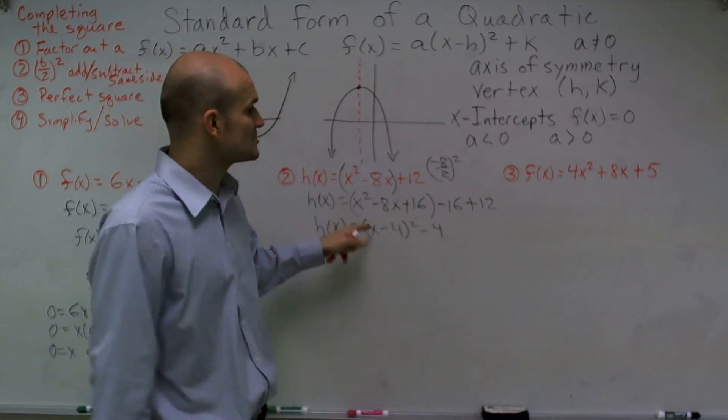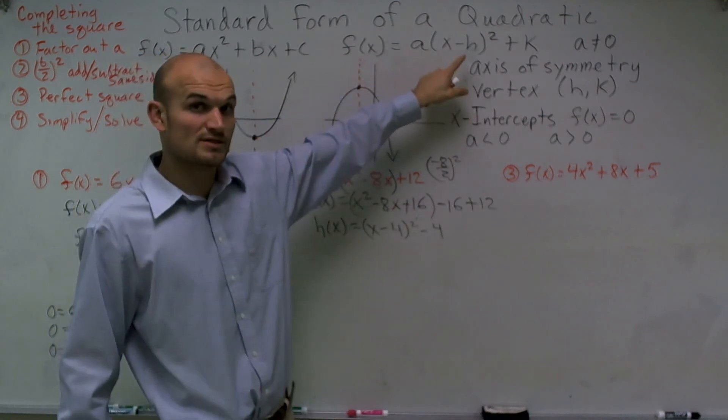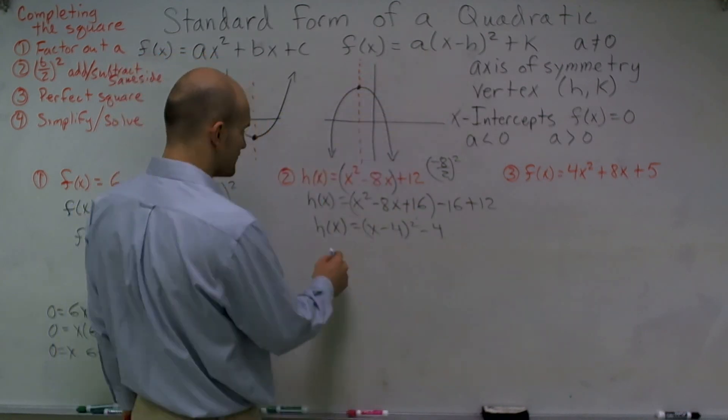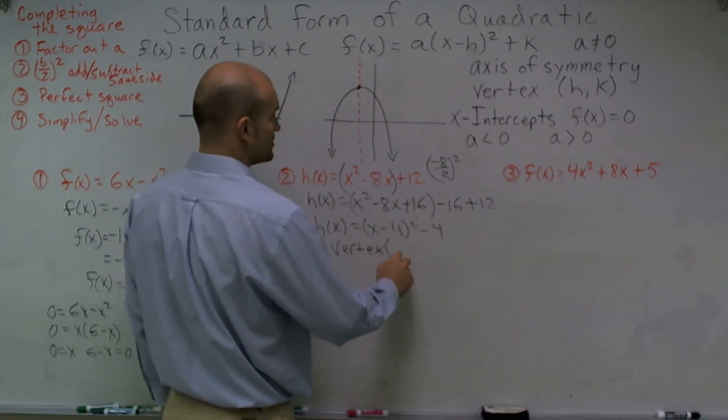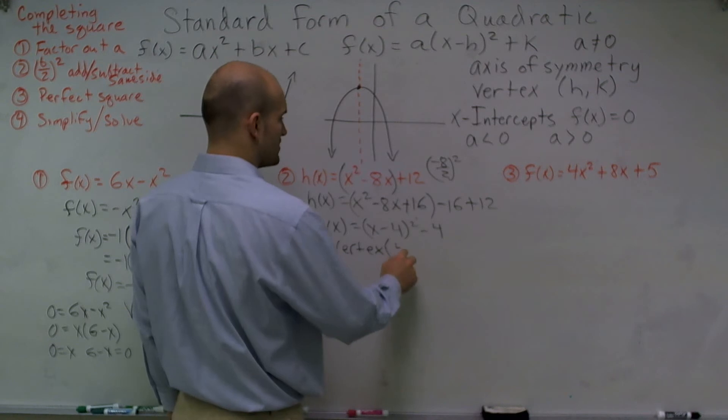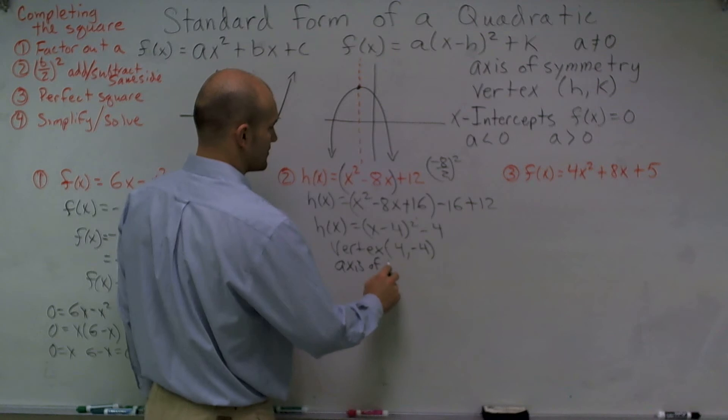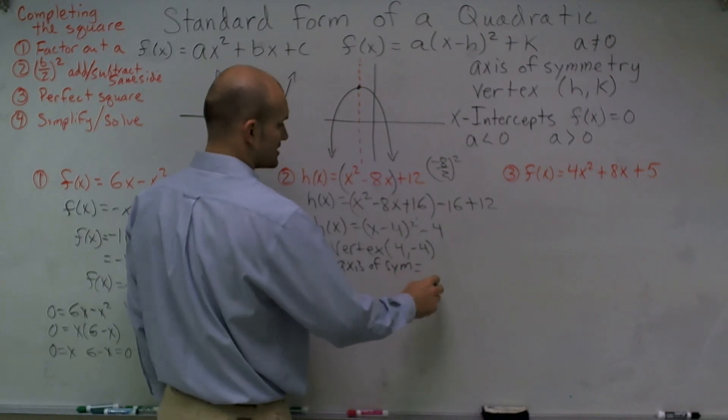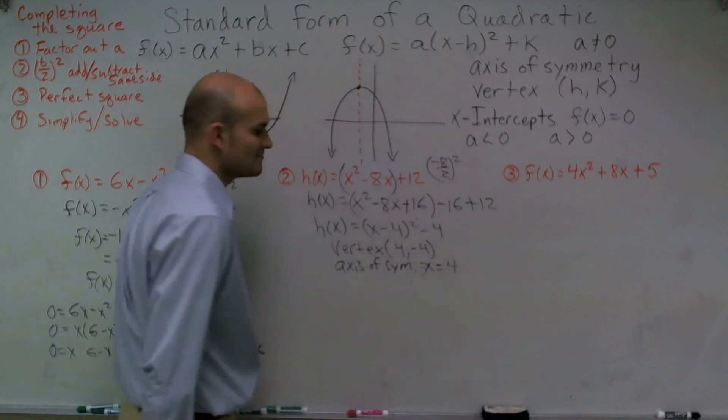Now, again, the reason why we do this is so that we can get a perfect square. Once we know it's a perfect square, we can determine that the vertex is going to be, for this one, 4, -4. My axis of symmetry is going to be when x = 4, my x value of my vertex.